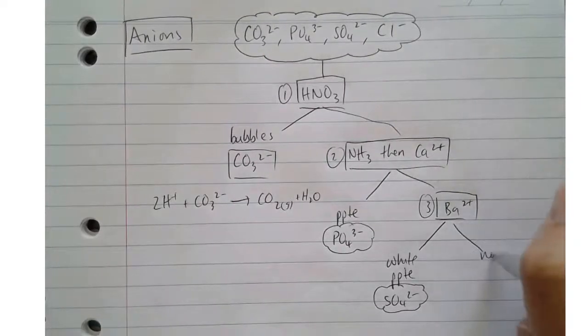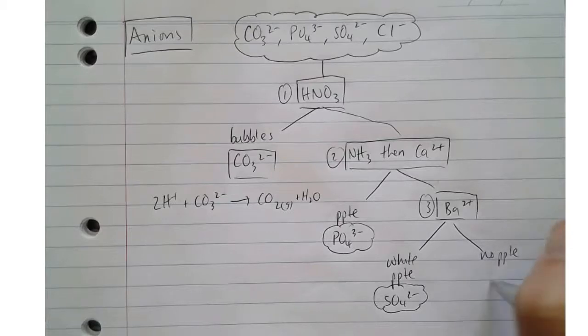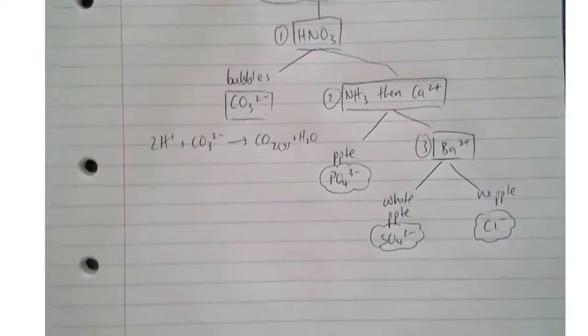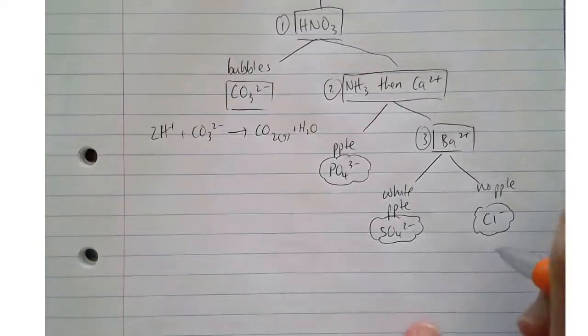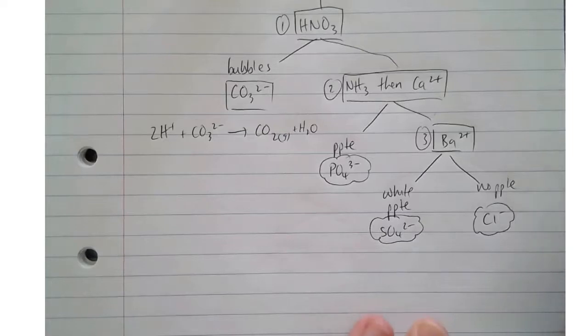Whereas if we get no precipitate out of our set, we can identify that it's chloride, but if we wanted to actually further confirm that it's chloride, which is always a smart decision, because just the absence of a result is not always a result in itself, we can add silver ions.